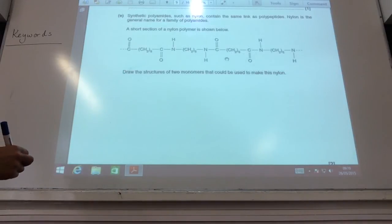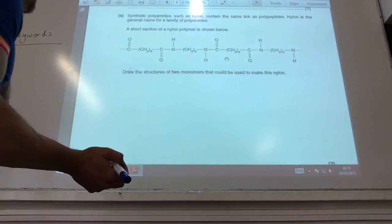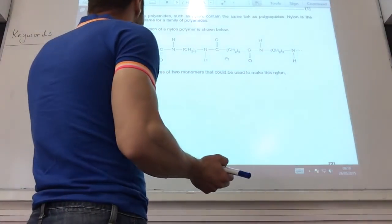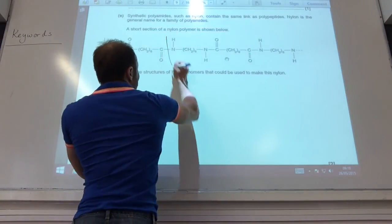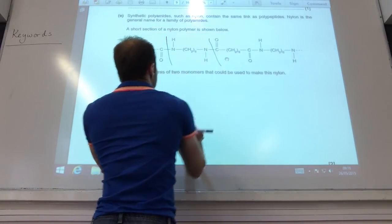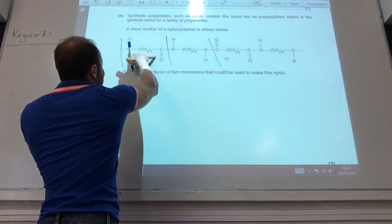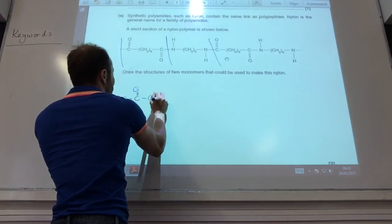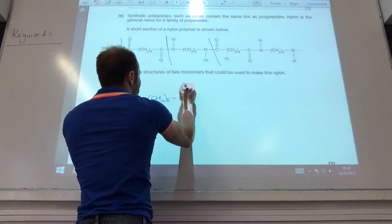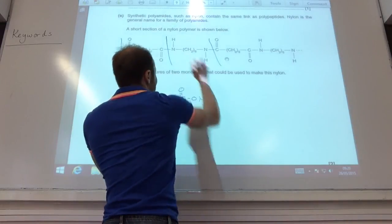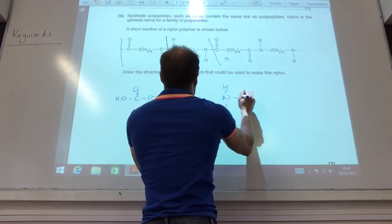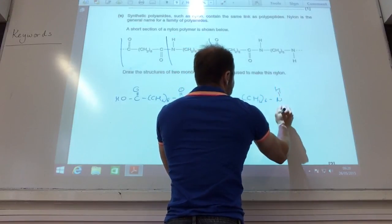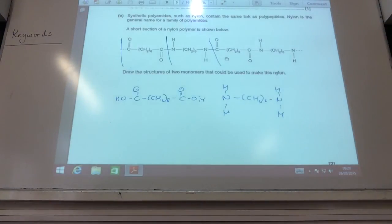Right, I now need to draw nylon. I'm sure you've made that. Structures shown below, draw the monomers. So you look for your amide bonds like so. That is obviously going to become your di-carboxylic acid. You literally copy out, just popping on the OH groups like so.